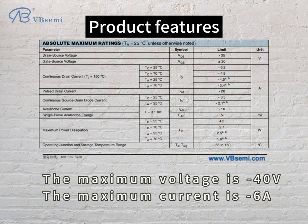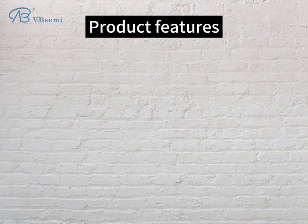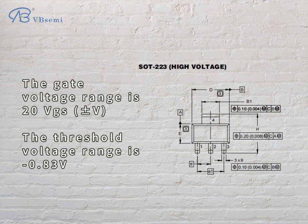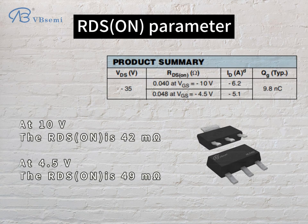The maximum voltage is -40V, the maximum current is -60A, and the gate voltage range is ±20V. The threshold voltage range is -0.83V. The Rds(on) parameter at 10V is 42mΩ.